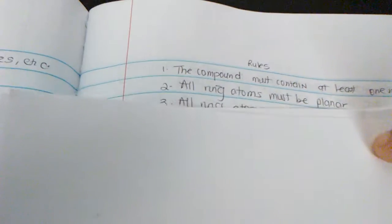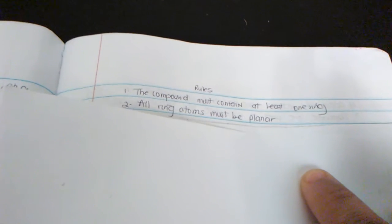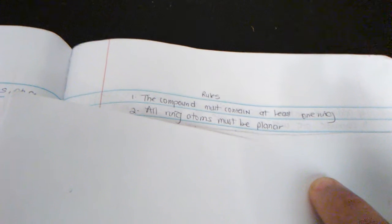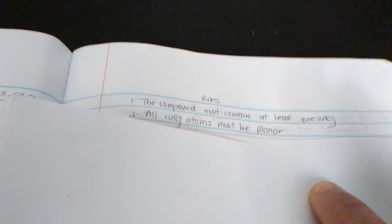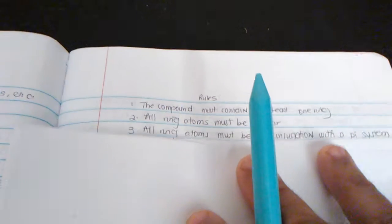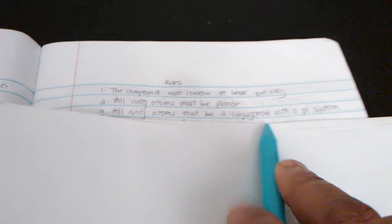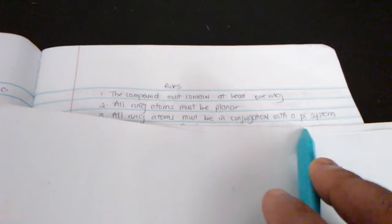Rules to determine if something is aromatic, anti-aromatic, or non-aromatic. The first rule is the compound must contain at least one ring. The second rule is all the ring atoms must be planar. The third rule is all the ring atoms must be in conjugation with a pi system.